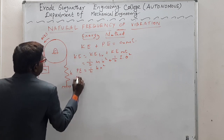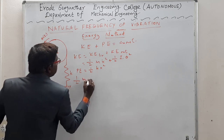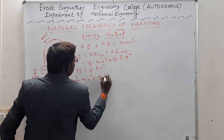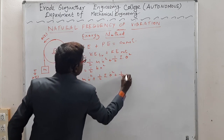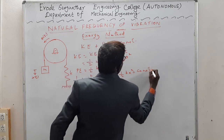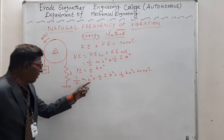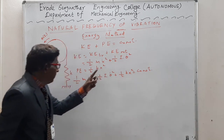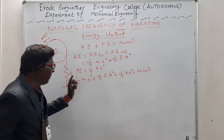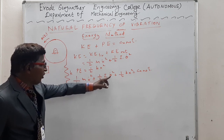Now we have the expression KE plus PE equal to constant in expanded form: (1/2)mẋ² plus (1/2)Iθ̇² plus (1/2)kx² equals constant. However, inspecting the equation, there are two terms involving the variable of linear displacement x and ẋ, and there is one term which involves the angular velocity based upon the angular coordinate θ.